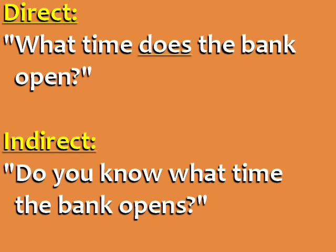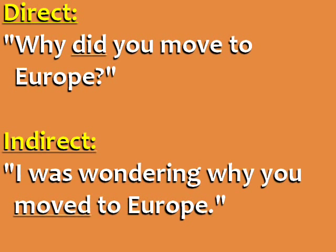Direct: 'What time does the bank open?' Indirect: 'Do you know what time the bank opens?' In indirect questions, we don't use auxiliary verbs like do, does, or did. Also, in the indirect question, we say 'the bank opens.' Direct: 'Why did you move to Europe?' Indirect: 'I was wondering why you moved to Europe.' Again, there's no auxiliary verb 'did' in the indirect question. As a result, we say 'moved' instead of 'move.'